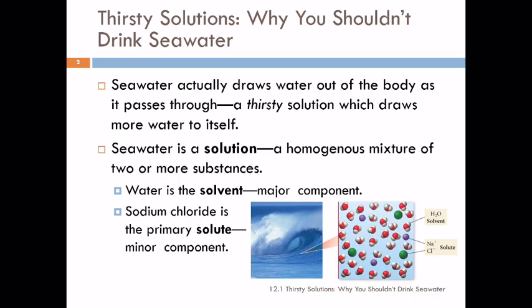So there are two parts to a solution. There's the solvent, the main part. It's usually the greater part by mass. And then there's the other things that are dissolved in it. So sodium chloride is the primary solute. That means it's a minor component. There's less sodium chloride than there is water. You can have lots of different solutes. You can only have one solvent.